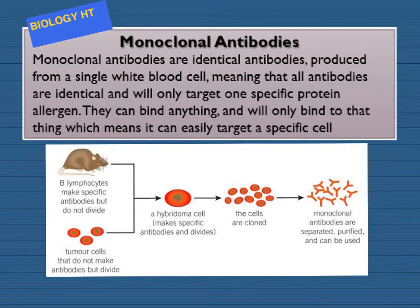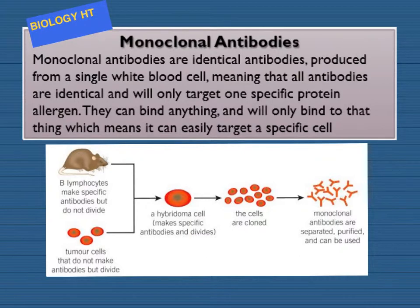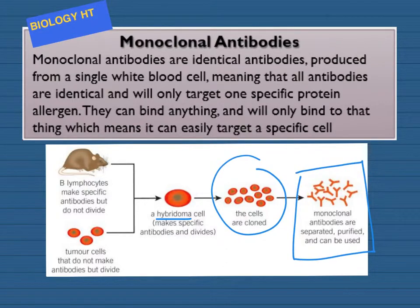This next section is for GCSE biology higher tier and covers monoclonal antibodies. These are produced from a single clone of a cell, and each type is specific to one binding site on a specific protein antigen, so they can target specific cells or chemicals in the body. In the laboratory they are made using mice — white blood cells called lymphocytes that make specific antibodies but do not divide are fused with tumour cells, which don't make antibodies but can divide. This creates a hybridoma cell. The cells are then cloned to produce a specific monoclonal antibody that can be separated, purified and used as a treatment.